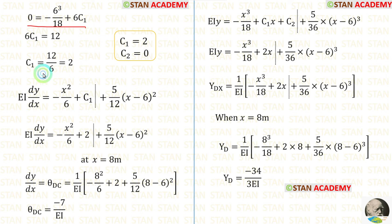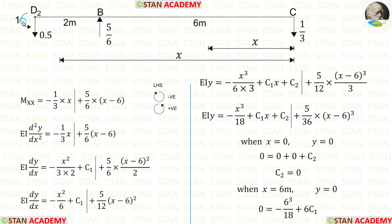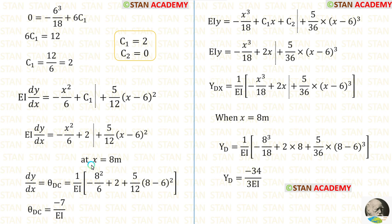From this equation we can calculate C1. Finally, we have calculated C1 and C2. Let us apply the value of C1 in the slope equation. We know that dY/dX is the slope; we have to find the slope at point D, that is theta DC. At point D the value of X is 6 + 2 = 8, so instead of X we apply 8. After the calculations, we are getting theta DC.